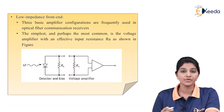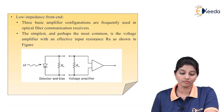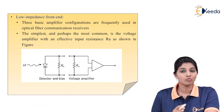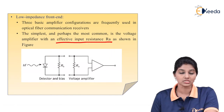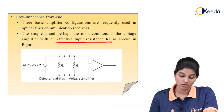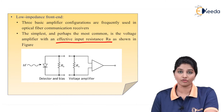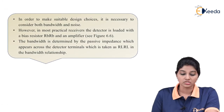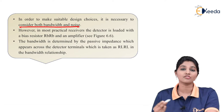Now let's talk about the low impedance front end. Here we can see the figure of the low impedance front end — one of the three basic amplifier configurations frequently used in optical fiber communication systems, mostly in the case of receivers. The simplest and most common is a voltage amplifier which provides an effective input resistance RA. We have a detector and bias circuit as well as a voltage amplifier circuit. In order to make a suitable design choice, it is necessary to consider both bandwidth and noise, as both are going to affect the transmission of the signal.